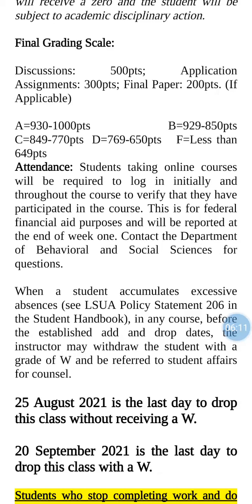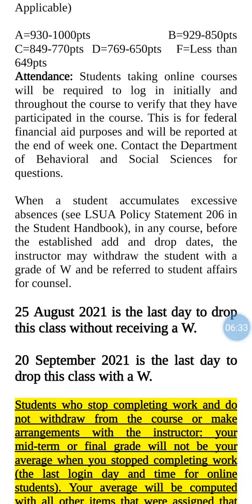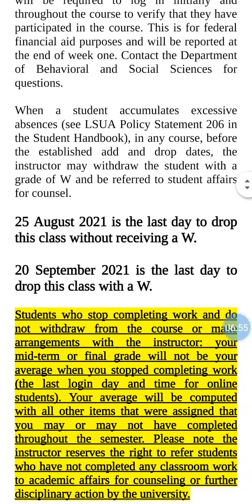Your final grading scale: discussions are worth 500 points. Application assignments are 300 for sure. We'll decide next week on the final paper or quiz assessments. Attendance — remember that you have to log in and also complete coursework if you are receiving federal financial aid. All of that is reported. Drop dates are listed in the academic calendar. August 25th is the last day to drop without receiving a W, and September 20th is the last day to drop the class with a W.